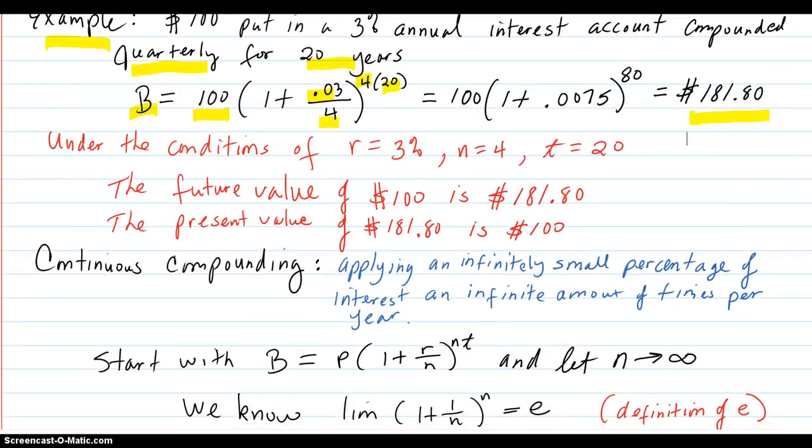So under the conditions of r equals 3%, four compounding periods, 20 years, the future value of $100 is $181.80.